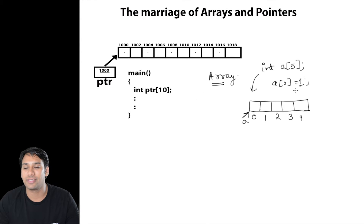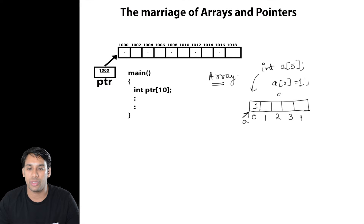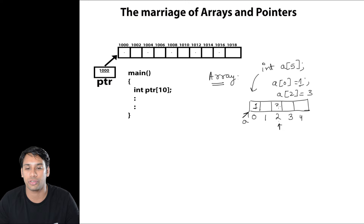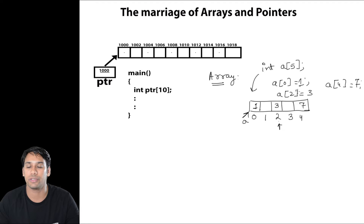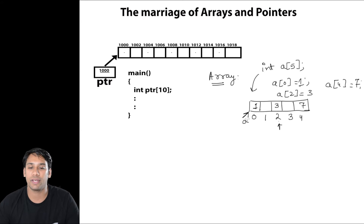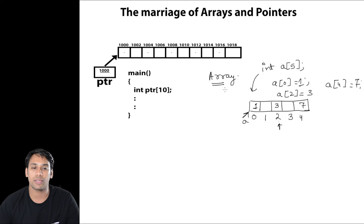When I do a[0] = 1, that means I am storing 1 into index location 0. When I do a[2] = 3, I am storing 3 in index location 2. When I say a[4] = 7, I am storing 7 into index location 4. If you look closely at this diagram, in most books they show a with an arrow pointing to this array. Now let us go deeper into this topic and see what arrays really are.